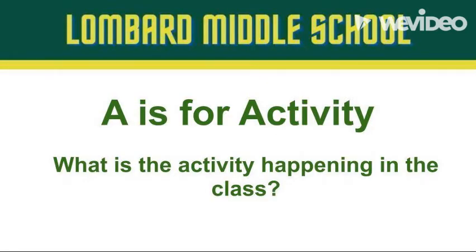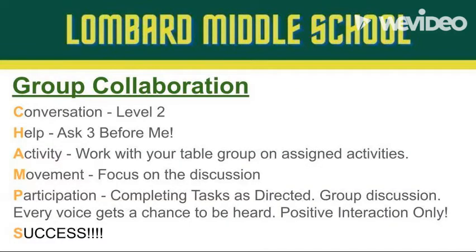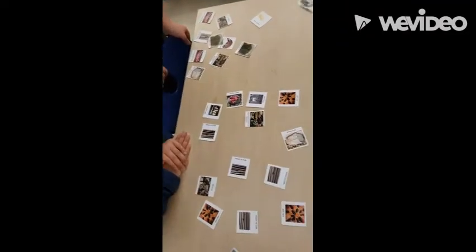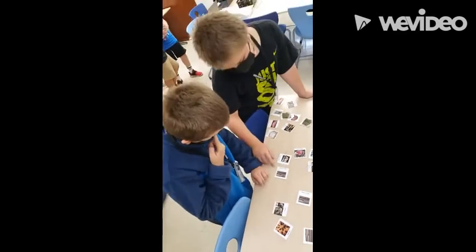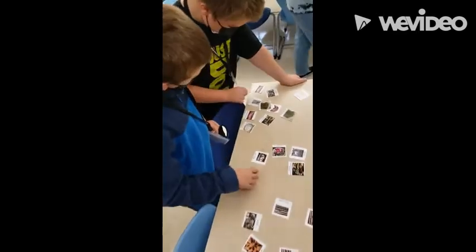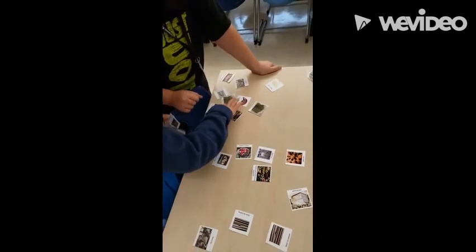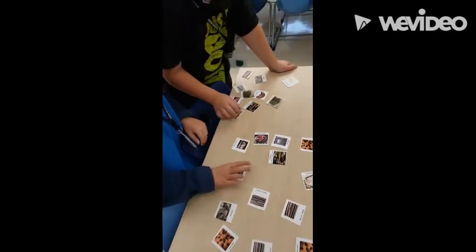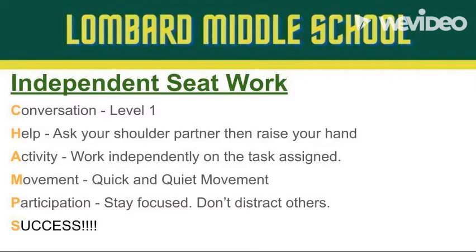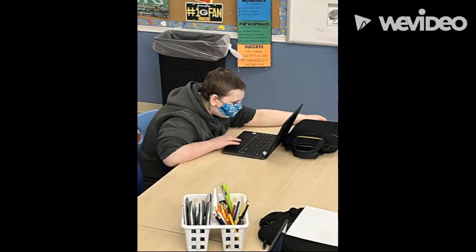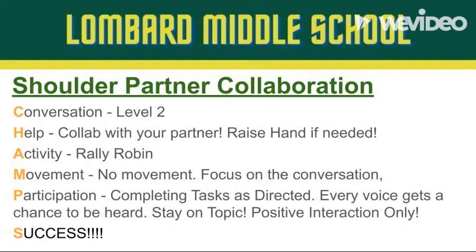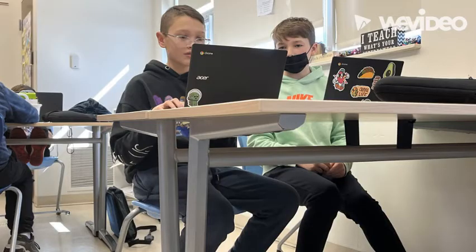A is for activity. What's the activity happening in the classroom? The teacher will let you know. For example, is it group collaboration and are you working with your table group? It could be independent seat work, or maybe it's a shoulder partner collaboration. Either way, the activity is going to tell you what you should be working on.